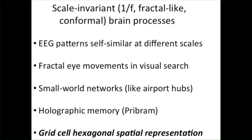There are a number of scale-free, or scale-invariant, fractal-like processes — one over F noise. Conformal is another word for a similar type of thing, which is basically scale-invariant or scale-free. We've heard the first two talks about EEG patterns being self-similar at different scales. Also, there are reports of fractal eye movements and visual search, which use fractal-type patterns to zoom in on what the person is searching for. Small world networks in the brain are thought to be arranged like airport hubs, where you have a few large hubs with many connections and many small hubs with a few connections, so that you can get from point A to point B with a relatively small number of hops or steps.